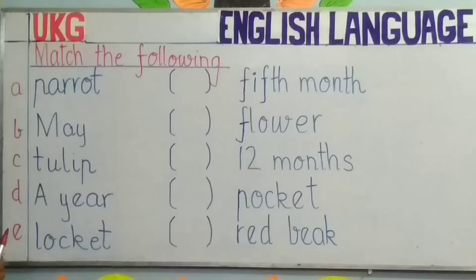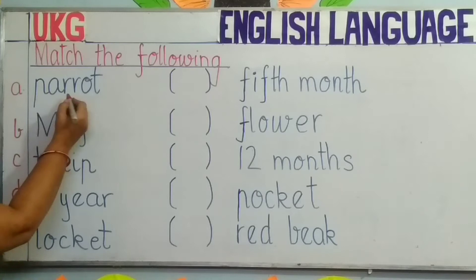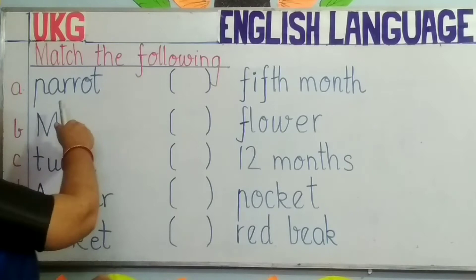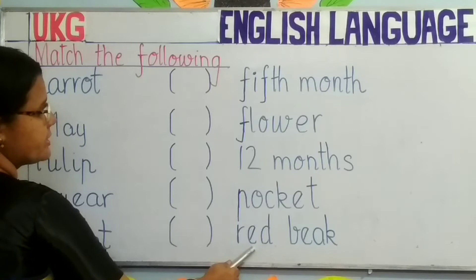The first word is 'parrot' in the A line. You need to match parrot with one of these words. Which picture is this, children? Yes, a red beak. So you have to match parrot with red beak. Where is red beak? You will write A.